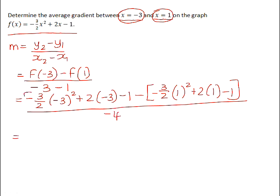If we calculate f(-3), we get -41/2. If we calculate f(1), we get -1/2. The overall gradient is positive 5.